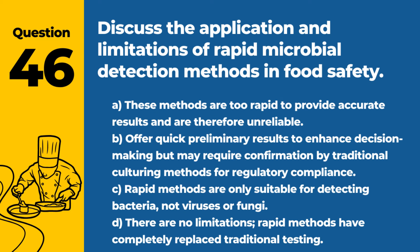Question 46. Discuss the application and limitations of rapid microbial detection methods in food safety. a. These methods are too rapid to provide accurate results and are therefore unreliable. b. Offer quick preliminary results to enhance decision-making, but may require confirmation by traditional culturing methods for regulatory compliance. c. Rapid methods are only suitable for detecting bacteria, not viruses or fungi. d. There are no limitations; rapid methods have completely replaced traditional testing. Answer: b. Offer quick preliminary results to enhance decision-making, but may require confirmation by traditional culturing methods for regulatory compliance. Rapid detection methods are valuable tools, but have limitations that must be considered.